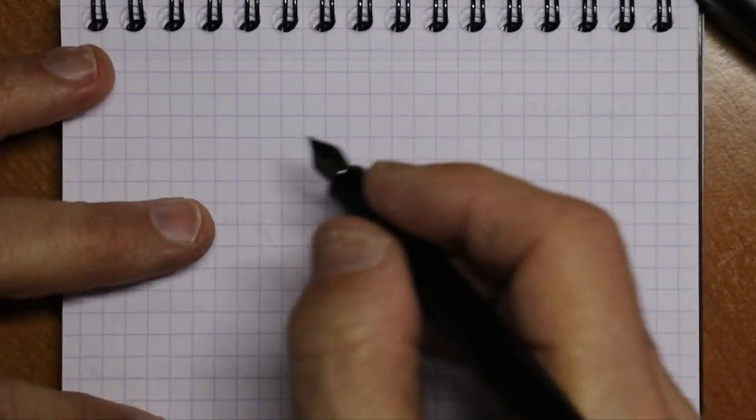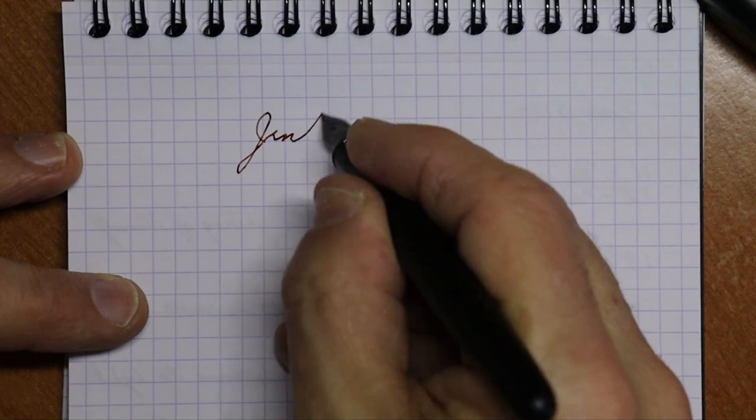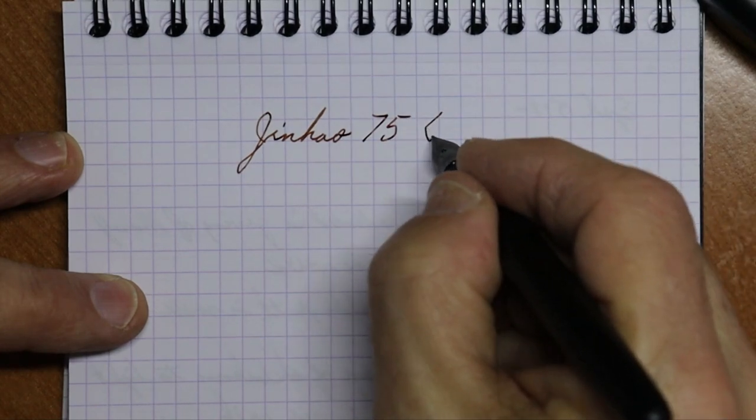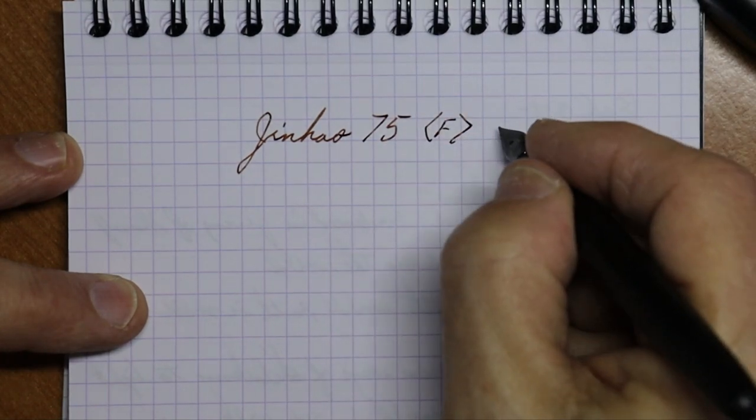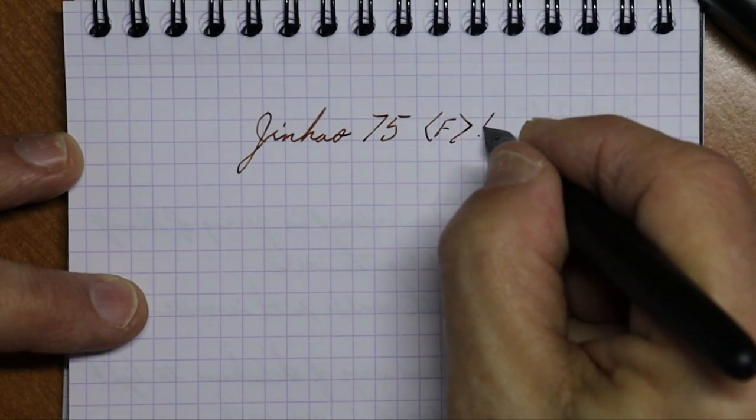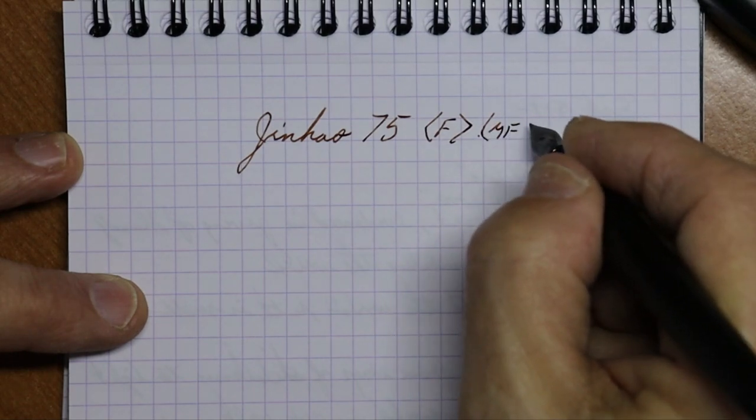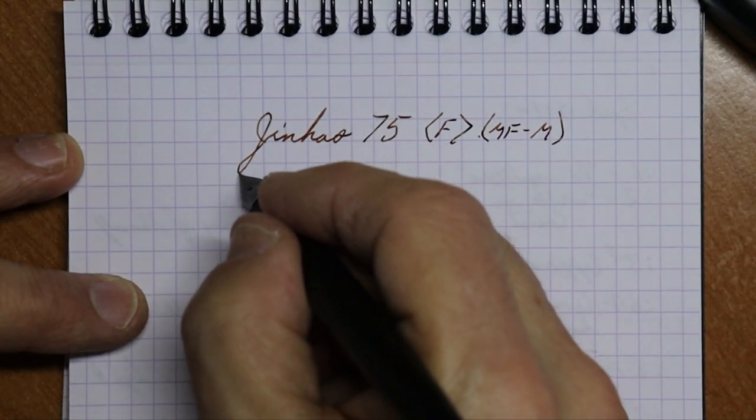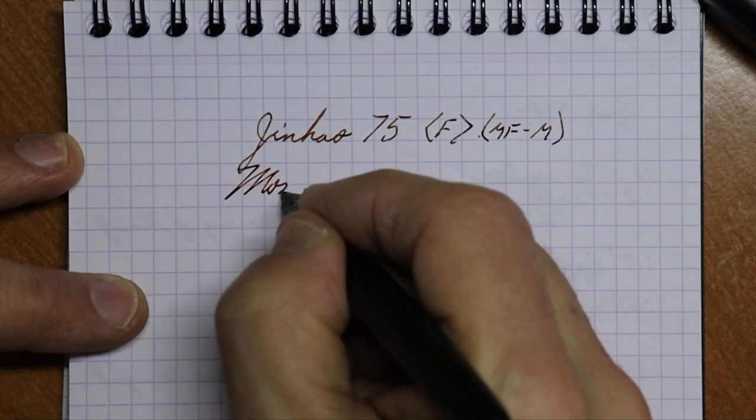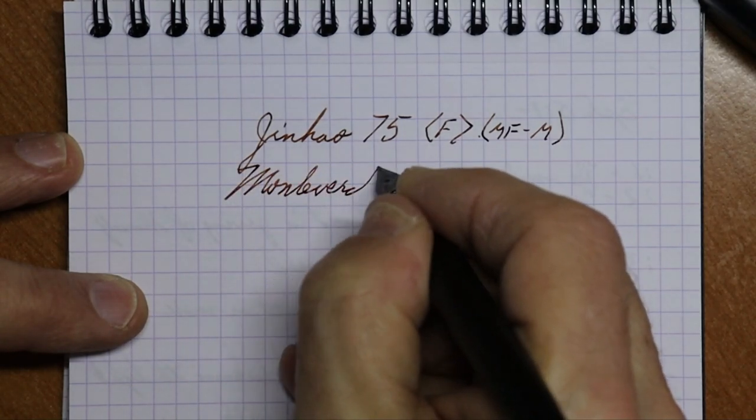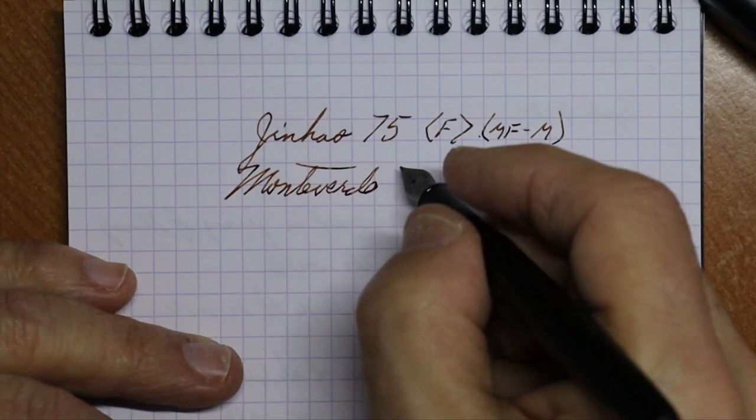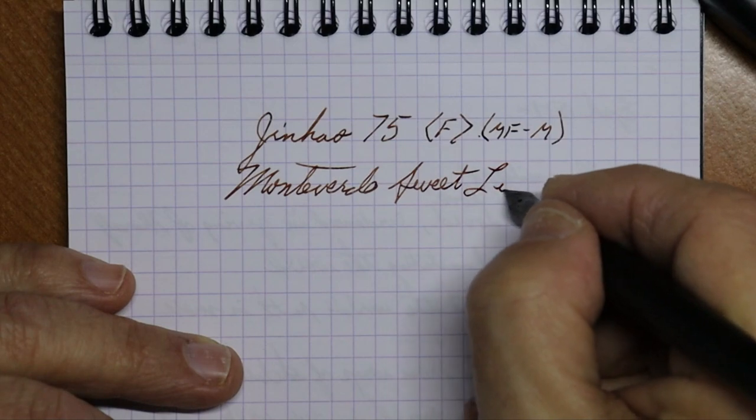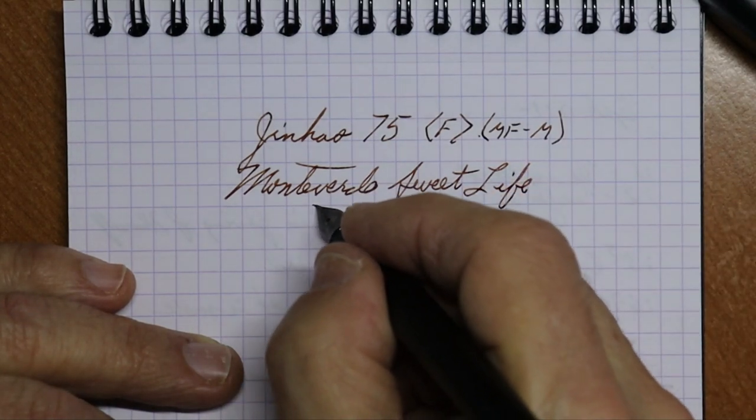Writing sample for the Jinhao 75. They call this a fine nib, but I think it writes more like a medium-fine to medium. The ink that we're using today is Monteverde Sweet Life series, and this is called Pumpkin Cake.